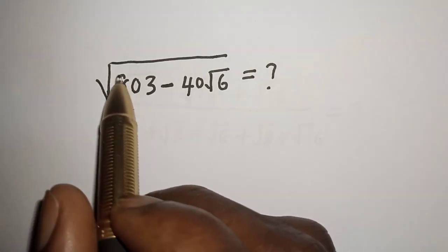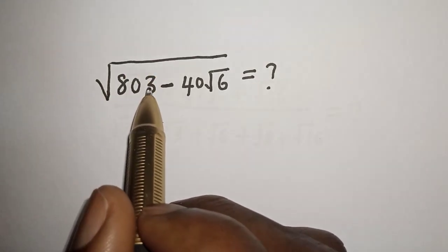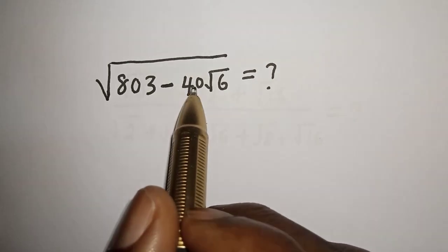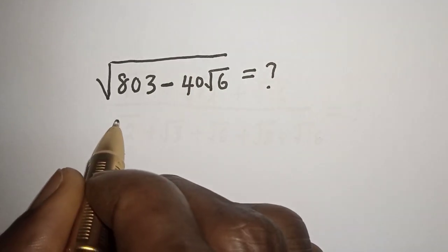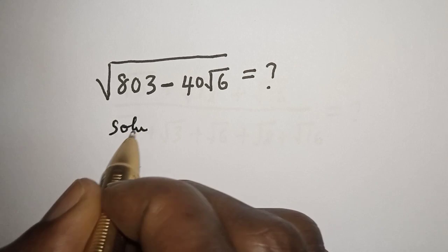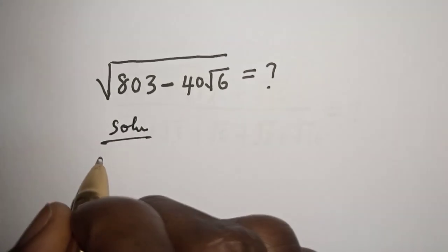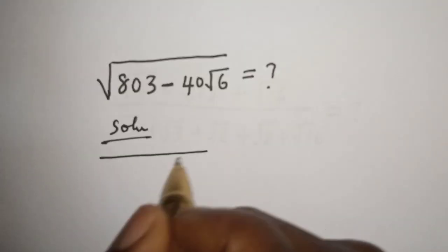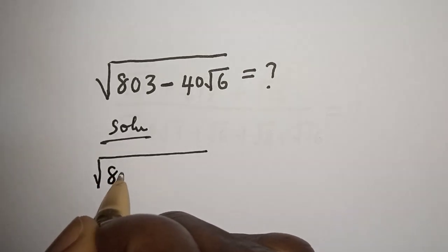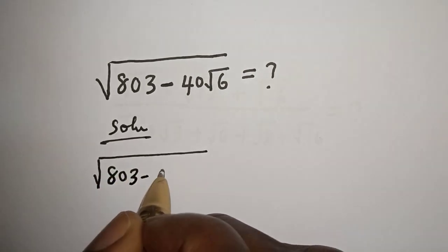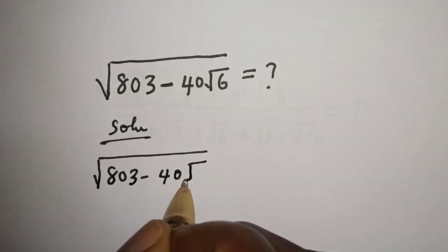Hello, welcome to Math Focus. Today we evaluate the square root of 803 minus 40 root 6. Solution: